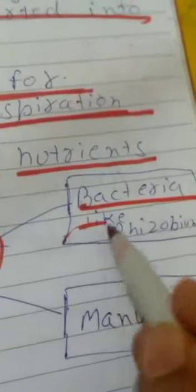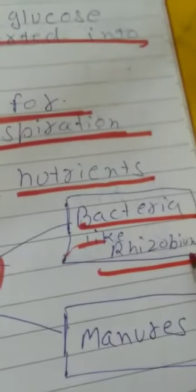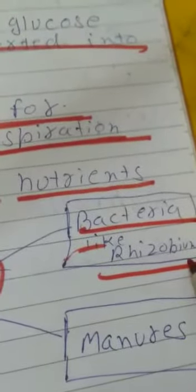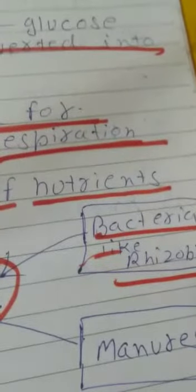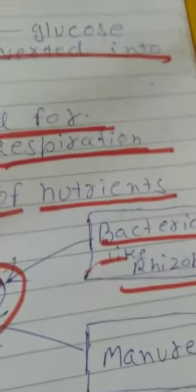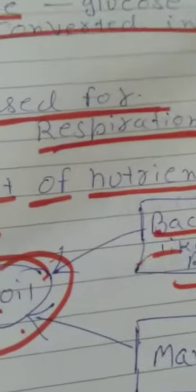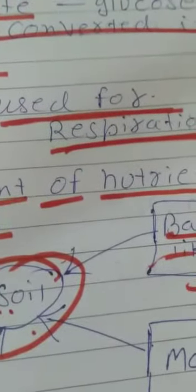Second way, the bacteria like the rhizobium. Have you heard the name rhizobium? What does rhizobium do? Rhizobium is present in the root nodules of leguminous plants.